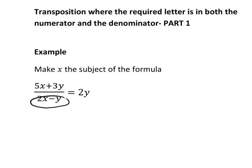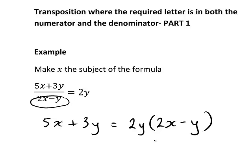So in this case, doing that, we'll cancel 2x minus y from the left, leaving 5x plus 3y on the left-hand side, and on the right-hand side, it becomes 2y times 2x minus y. And make sure you put the brackets around that full denominator expression to avoid ambiguities or errors in calculation later on.